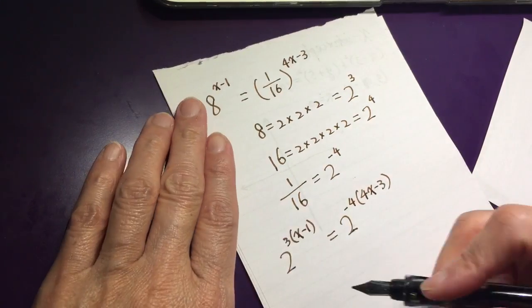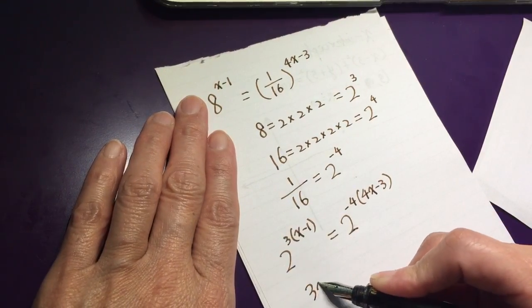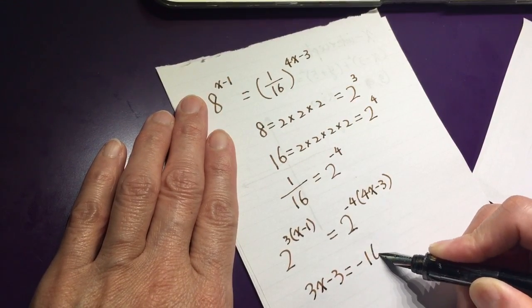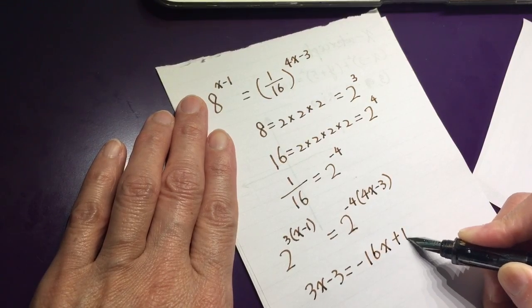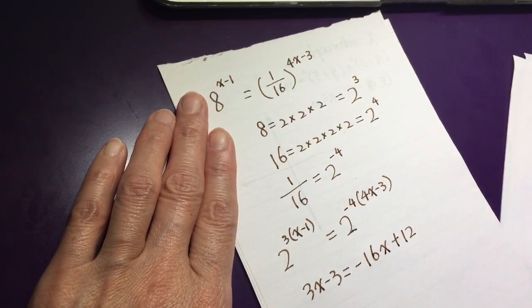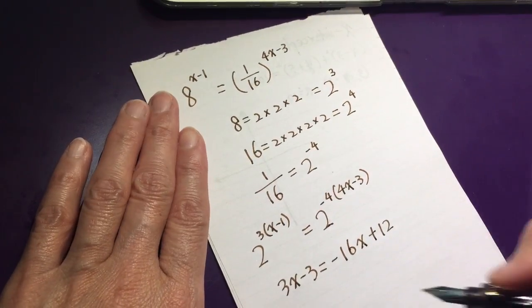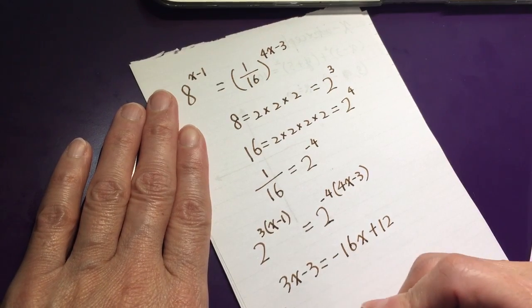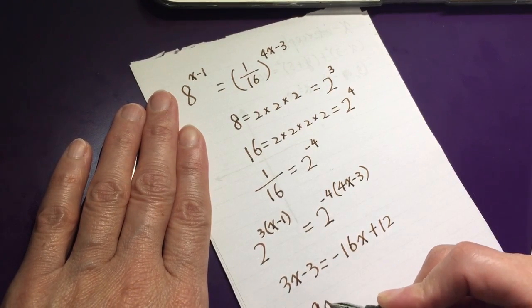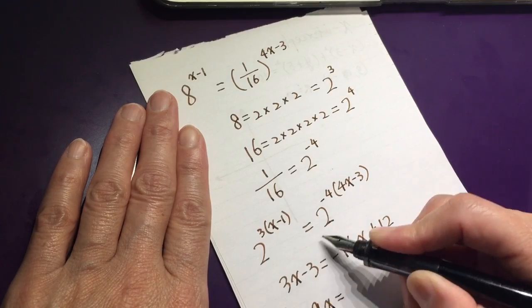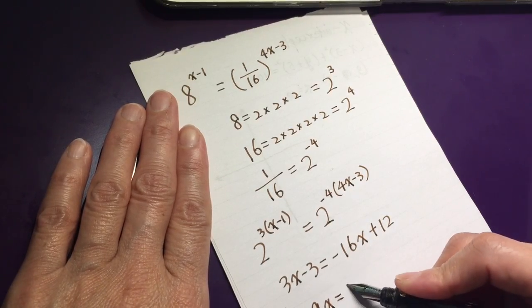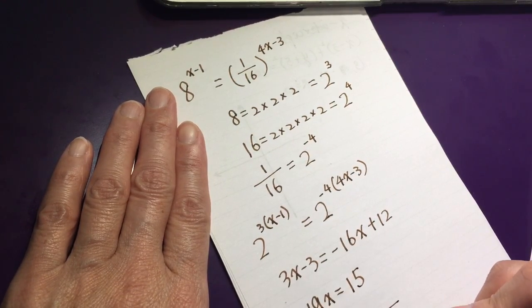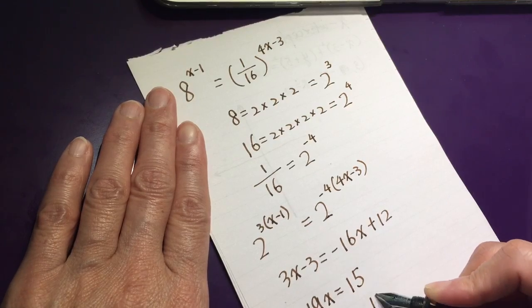The power should be the same. 3x minus 3 equals negative 16x plus 12, right? We did not change anything, just plug in the number. So, negative 16x move to this side, 19x. And negative 3 move to this side, equals 15. So, x equals 19 over 15.